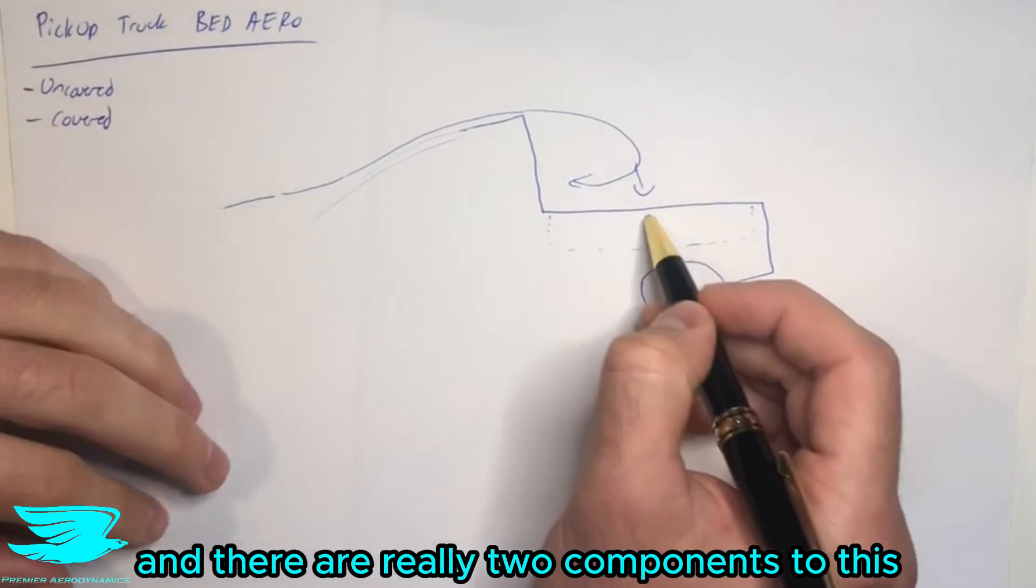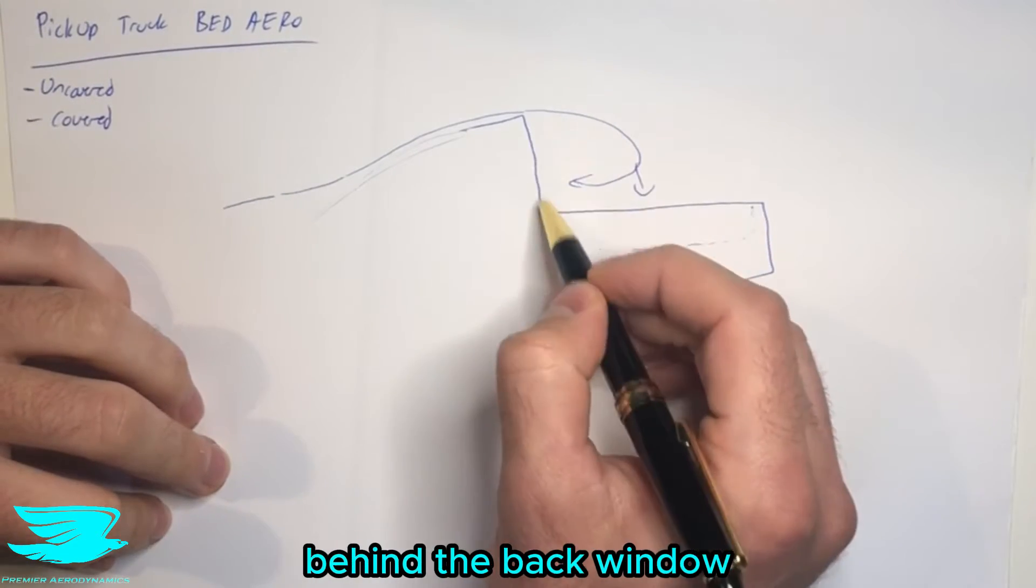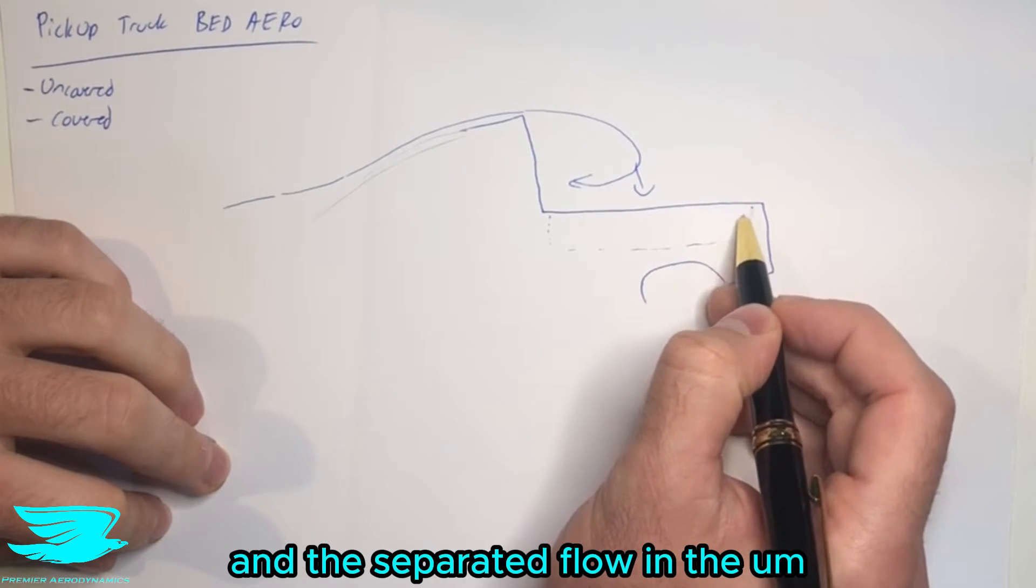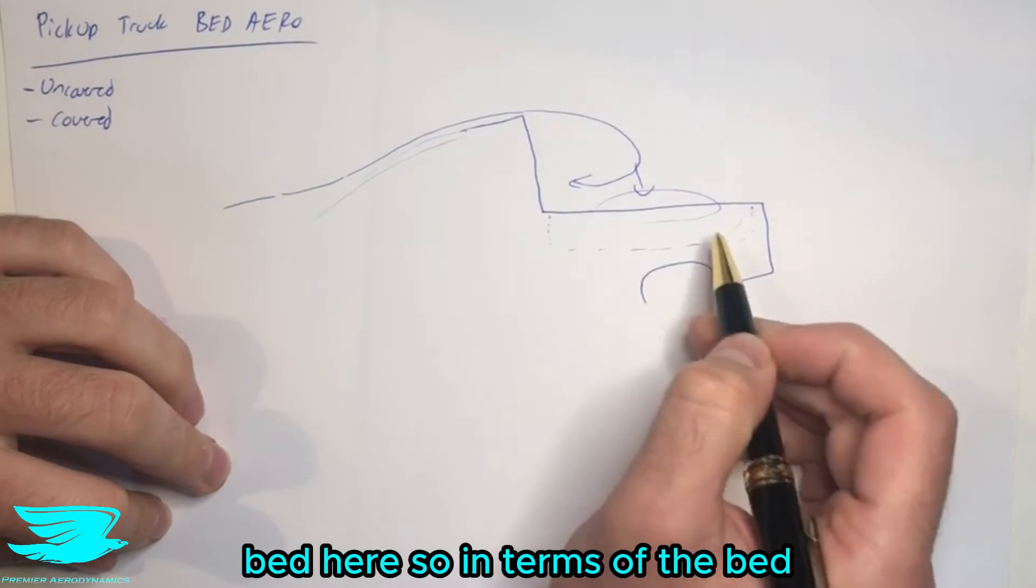And there are really two components to this. First of all, the separated flow in the top part behind the back window, and then the separated flow in the bed here.